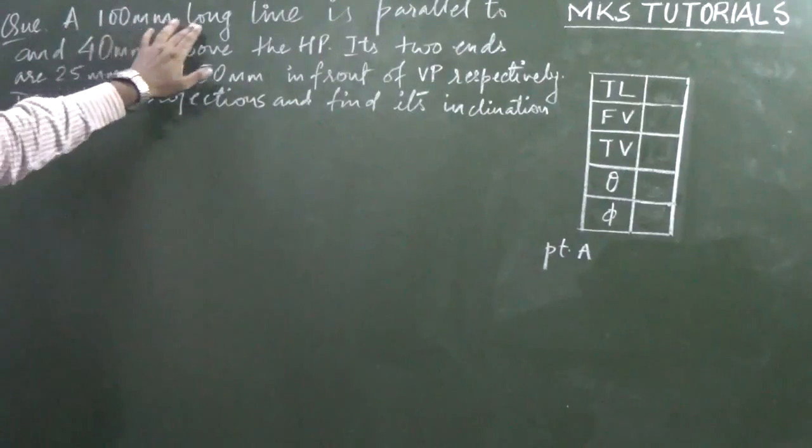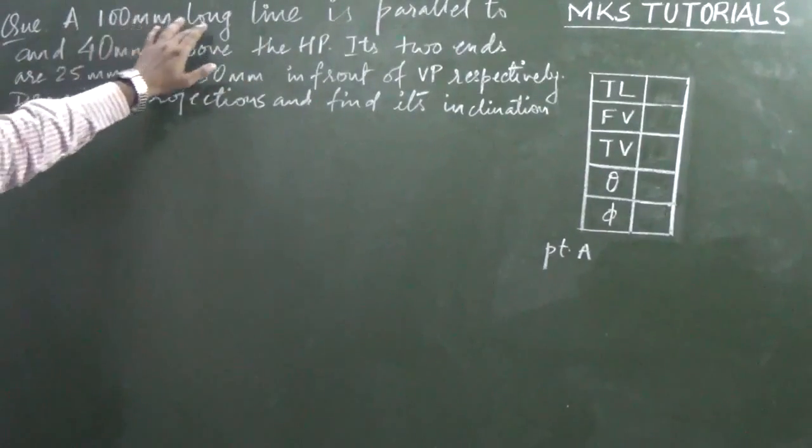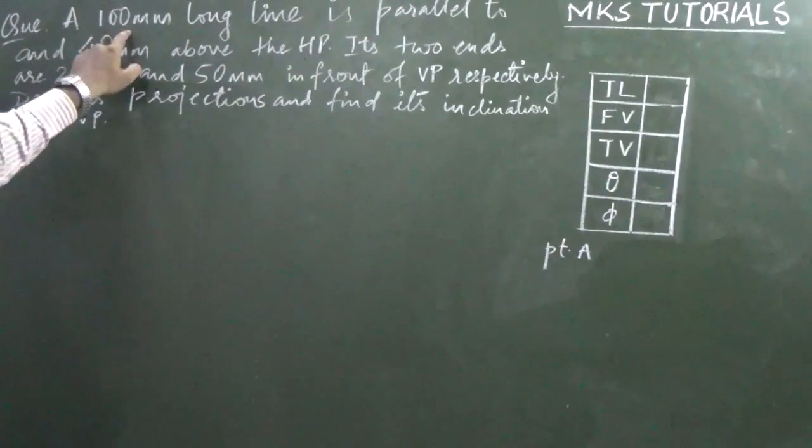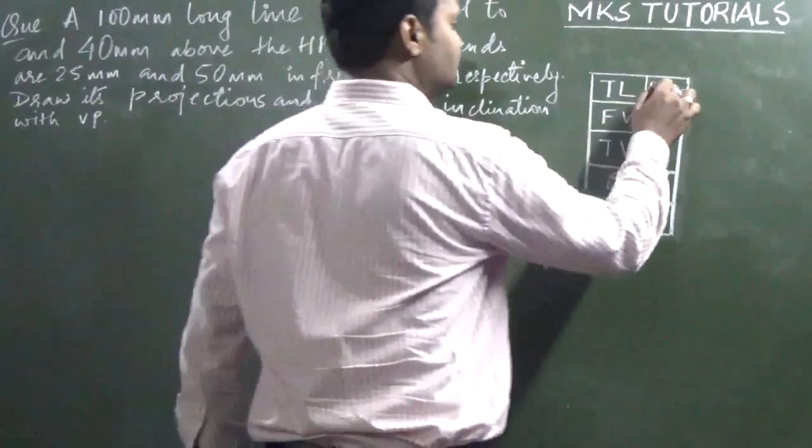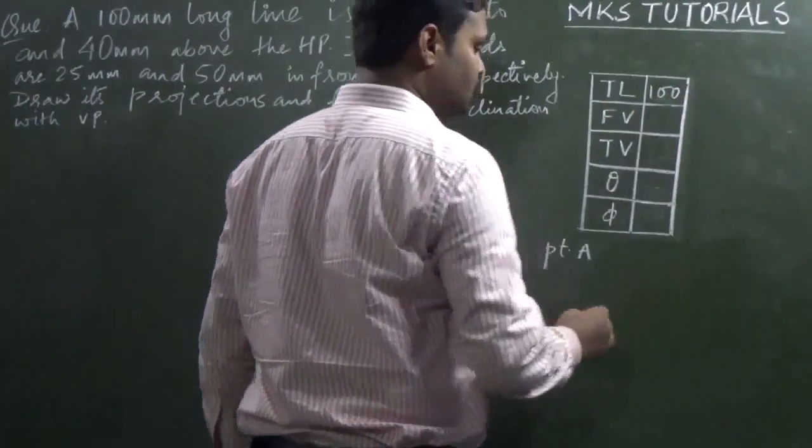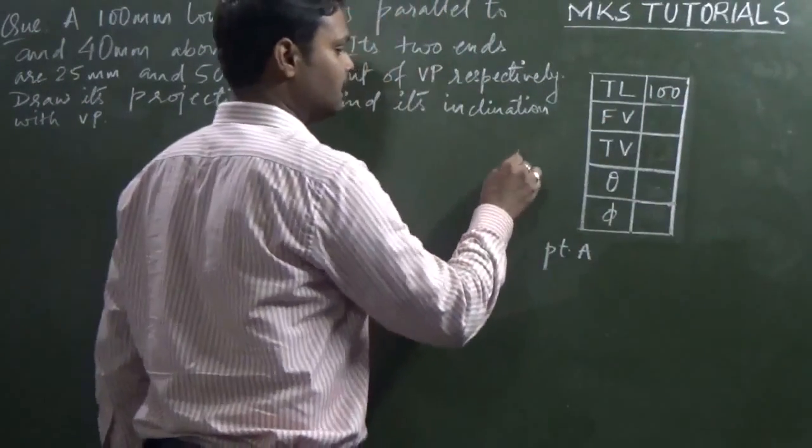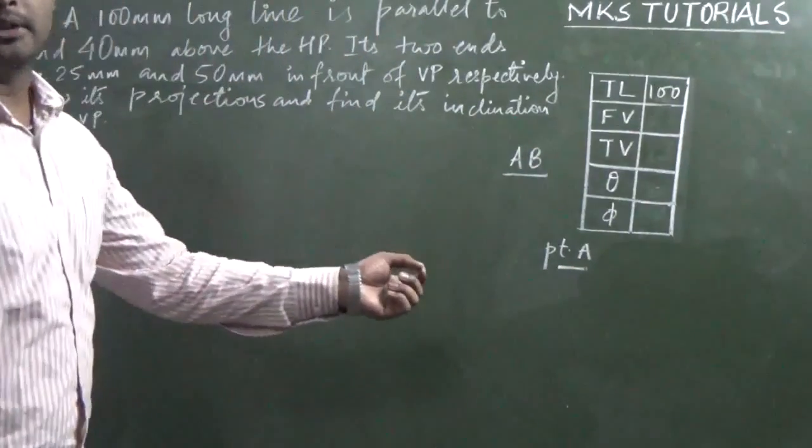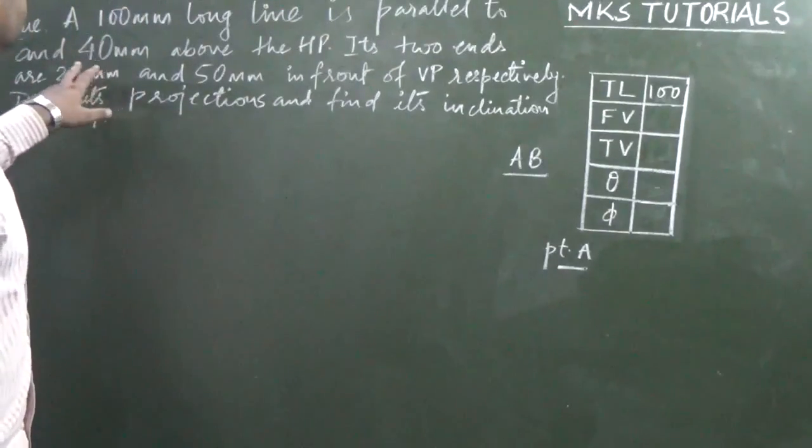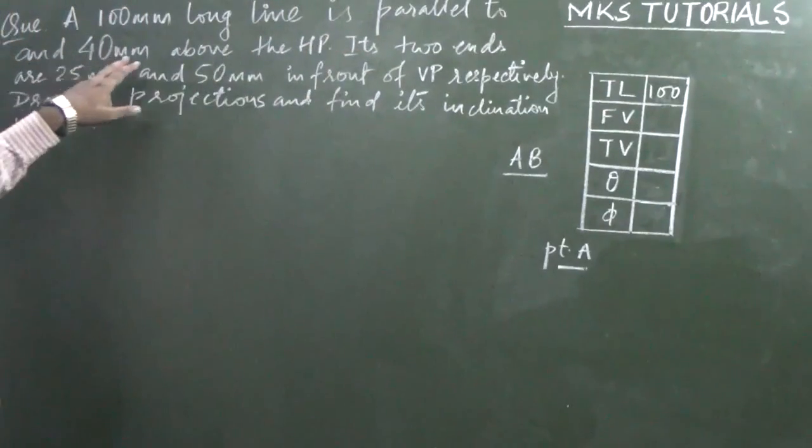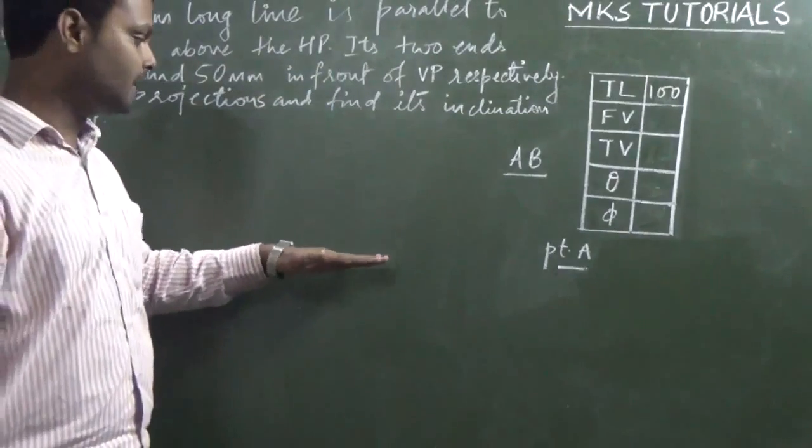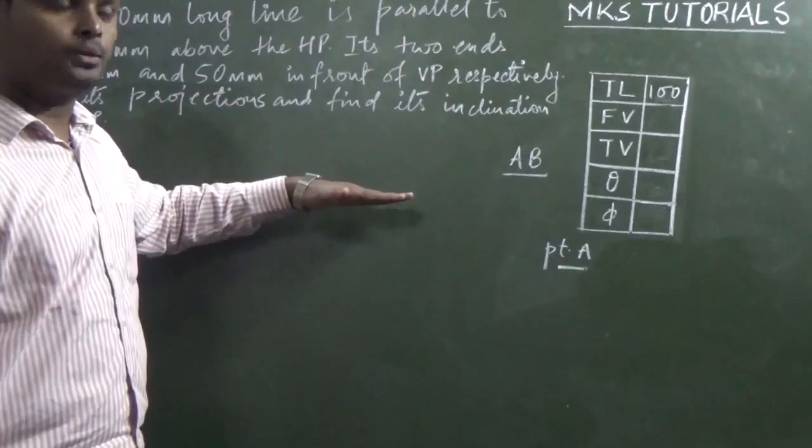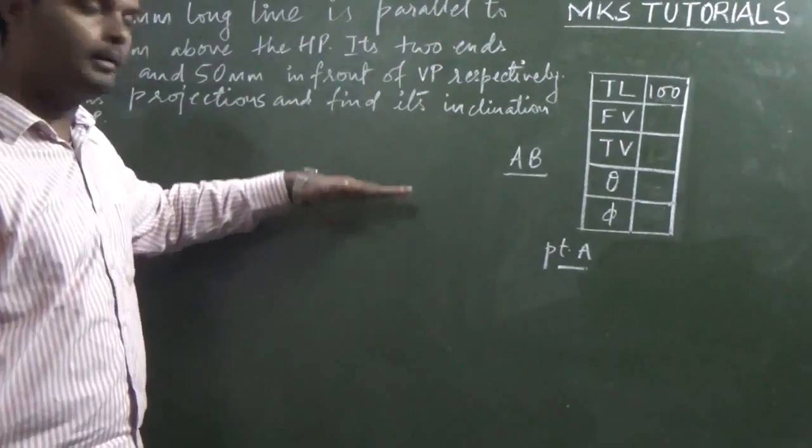The line is 100mm long. This is the true length of the line. The line is AB. You are given point A location. The 100mm long line is parallel to and 40mm above the HP. Line is parallel to 40mm above the HP.